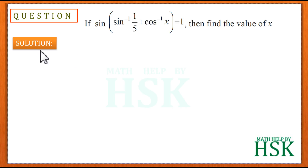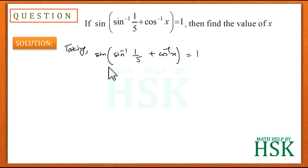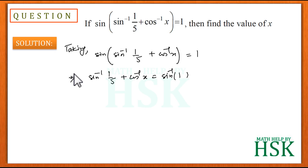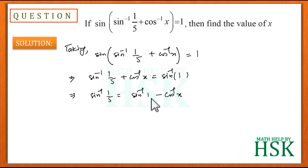To solve, we apply sin⁻¹ to both sides of the equation, giving sin⁻¹(1/5) + cos⁻¹(x) = sin⁻¹(1). Rearranging, sin⁻¹(1/5) = sin⁻¹(1) − cos⁻¹(x), moving cos⁻¹(x) to the other side.